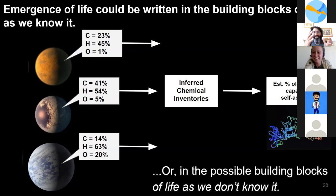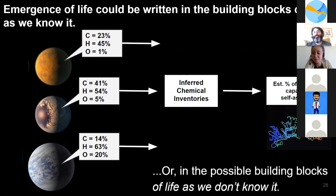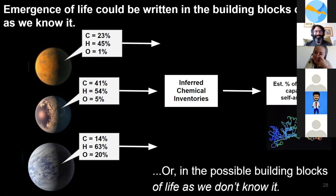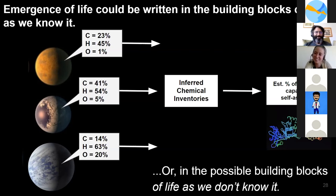It could also be that one setting created some aspects of the molecular engine, and then all that was transported to another setting, which allowed other chemistry to happen. So maybe you need the whole earth as a chemical system to transfer chemistry around and generate the building blocks of life. It's cool to think about the earth as a sort of assembly line in that sense.